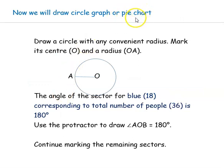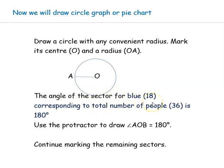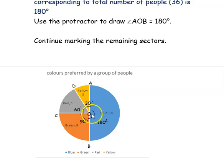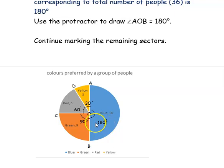Now, with the information from the above table, we can draw the pie chart. The first step is to draw a circle of any radius. We consider O as the center and draw a circle with radius OA. From the table, the blue color was preferred by 18 people and the angle corresponding to blue is 180 degrees. We mark angle AOB as 180 degrees, which represents the blue color preferred by those people.